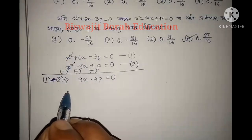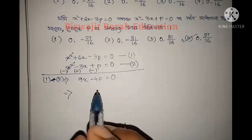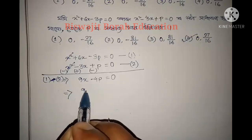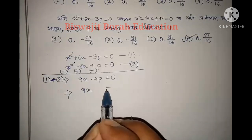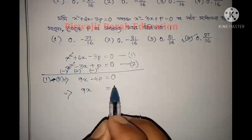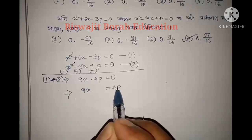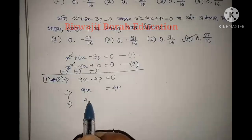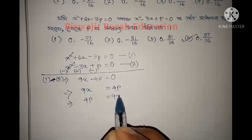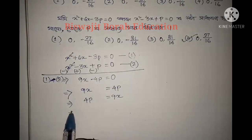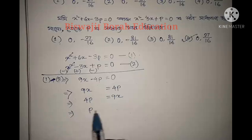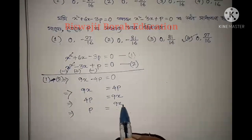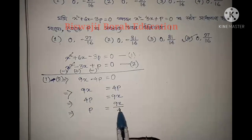So here, 9x equals 4p, which gives us p equals 9x divided by 4.